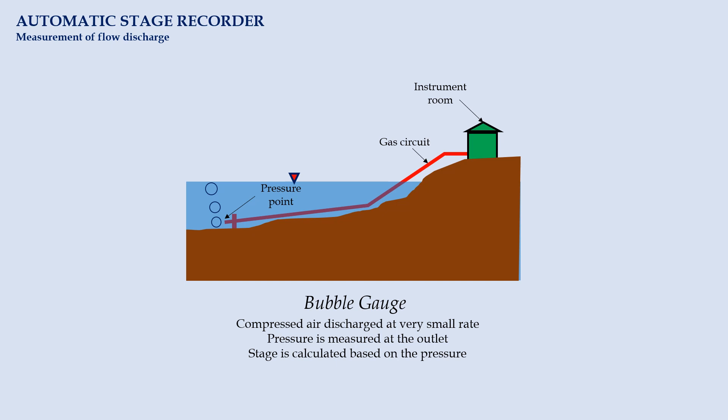Other than float gauge recorder, bubble gauge may be used. Compressed air is discharged through the outlet of gas circuit located at the bottom of river at a very small rate. As soon as the gas discharges, the gas pressure will be measured. This pressure equals to the depth of water above the outlet. A bubble gauge is sometimes preferred over a float gauge recorder for several reasons. The installation of bubble gauge does not require stilling well, and thus it is a more economical approach. Moreover, the instrument can work despite having large changes in stage.